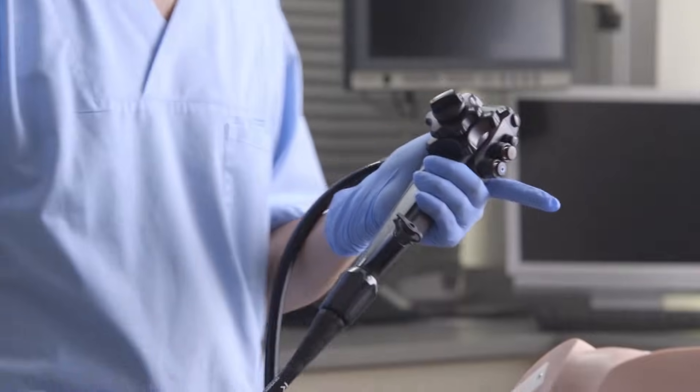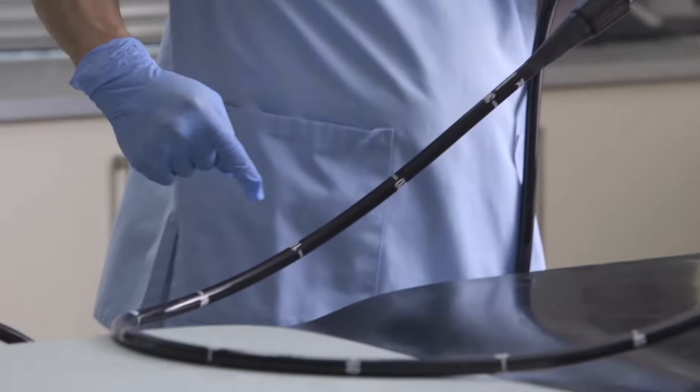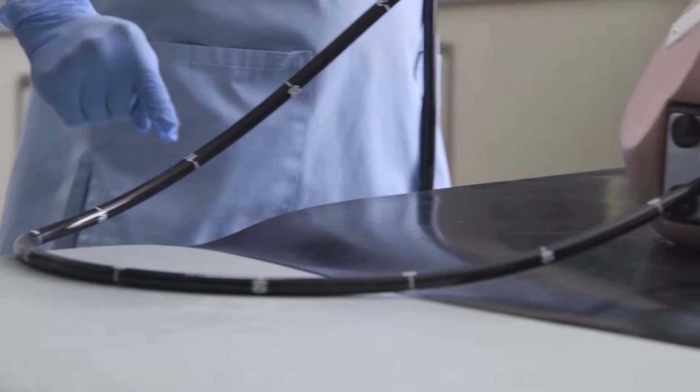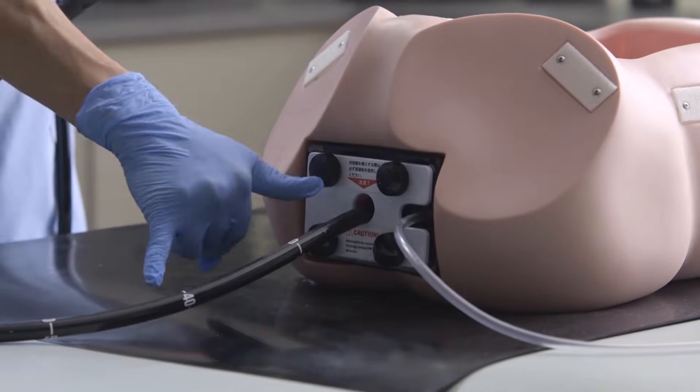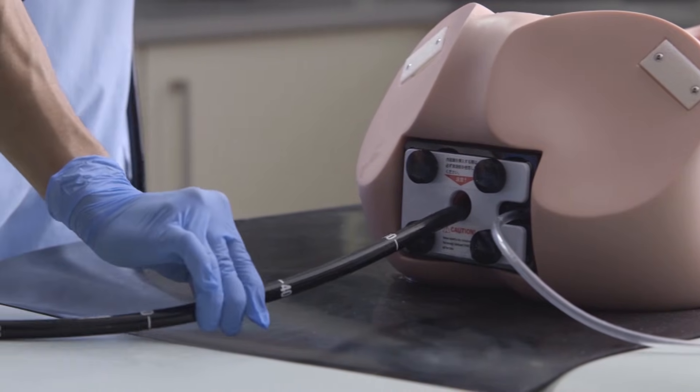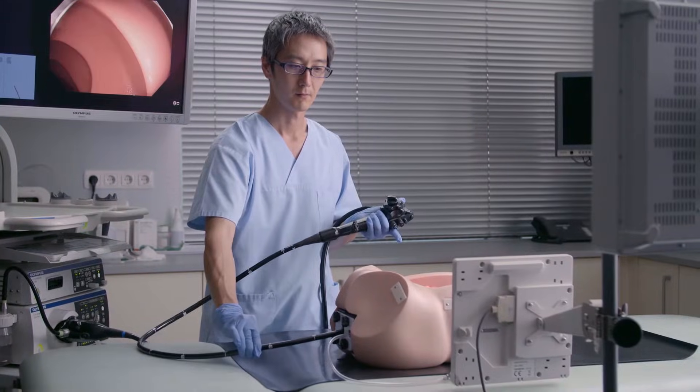Grab the control section firmly with your left hand, placing the insertion tube on the table forming a big loop. Then, hold the insertion tube approximately 30 cm from the anus.